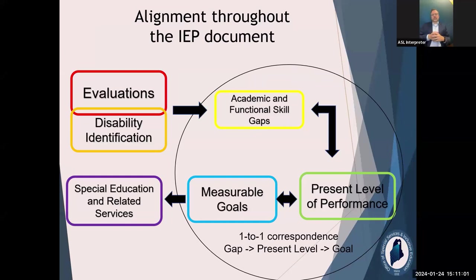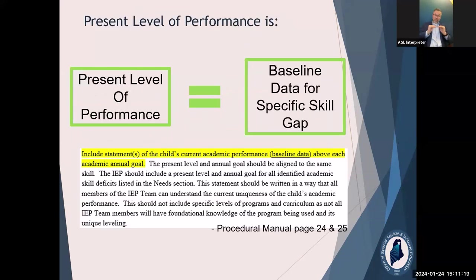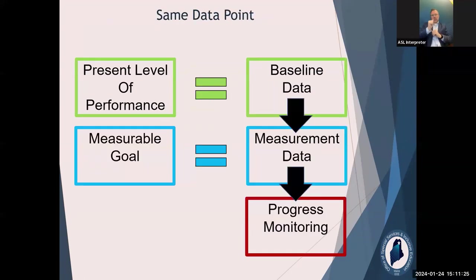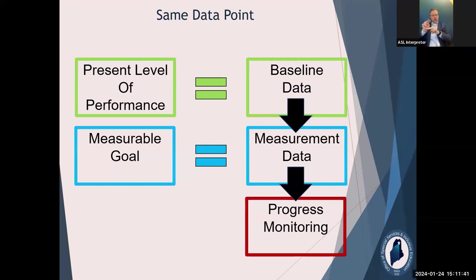For every gap, you have a present level and a goal. For every goal, you have a present level and a gap. It's a two-way street. The essence of what present level is — even if you forget everything else — is baseline data: your baseline data for that skill gap. Where are they right now? You're going to use that same data point as your present level baseline, to measure your goal, and for progress monitoring. Baseline data, goal measurement, progress monitoring — same data point.